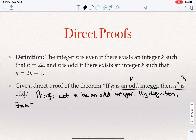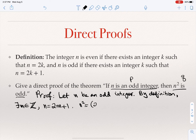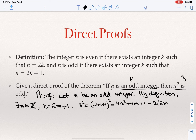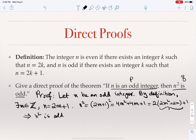By definition, what does it mean to be an odd integer? There exists an m in ℤ (the set of integers) such that n = 2m + 1. Now I want to show that n squared is odd. If n = 2m + 1, then n² = (2m + 1)² = 4m² + 4m + 1, which can be written as 2(2m² + 2m) + 1. Since 2m² + 2m is an integer, n² is 2 times an integer plus 1, therefore n² is odd.